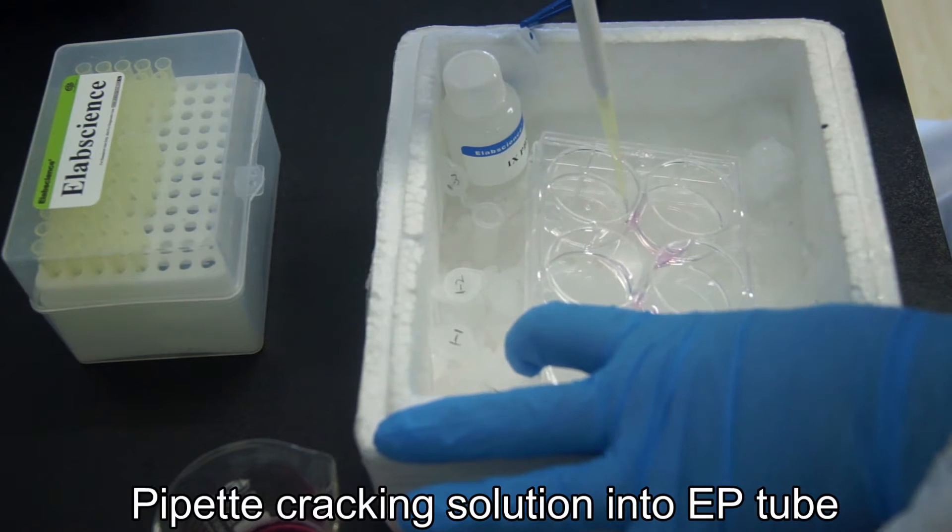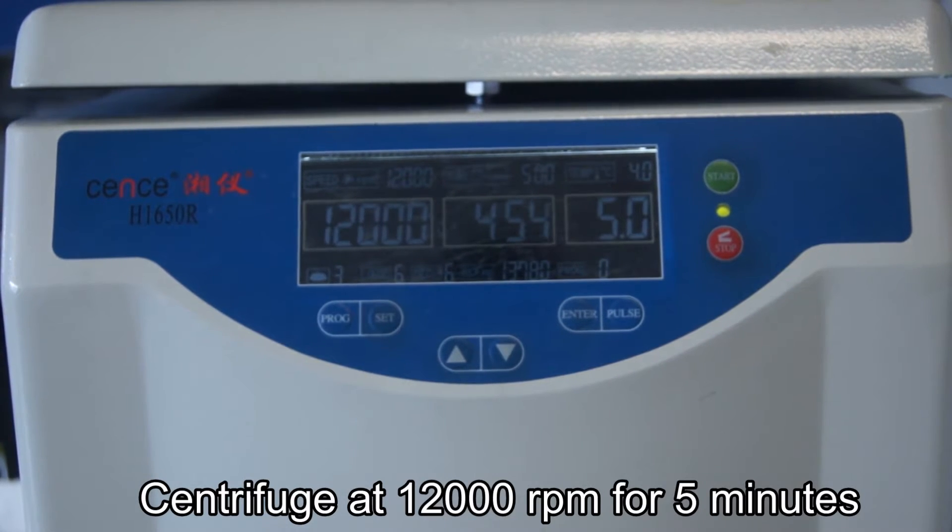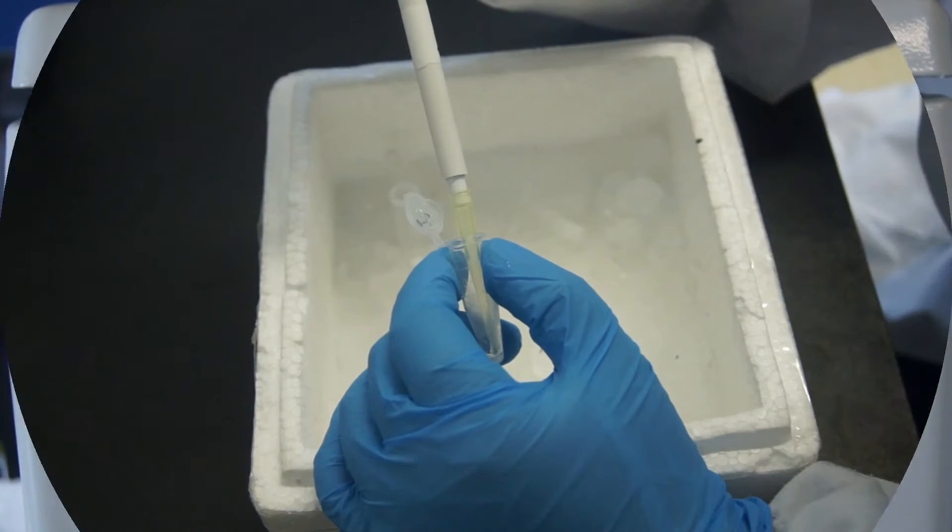Take the disrupted sample into an EP tube. Centrifuge at 12,000 RPM for 5 minutes at 4 degrees centigrade. Then take the supernatant.